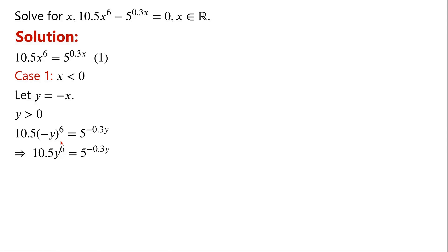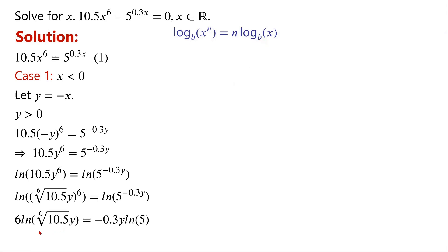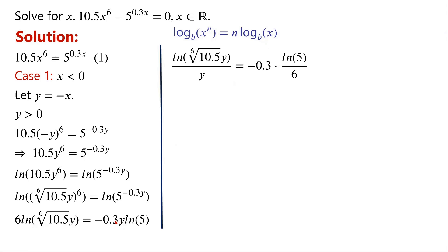Minus y all to the power of 6 is equal to y to the power of 6. Now we take ln on both sides of the equation. Applying the log power rule — log base b of x to the power of n equals n times log base b of x — we can write 6 ln of the 6th root of 10.5y equals minus 0.3y ln 5.